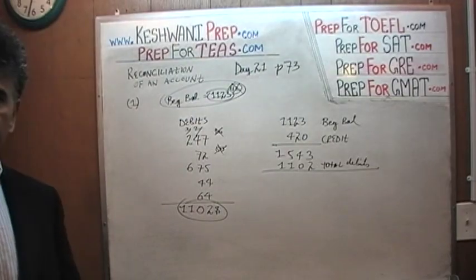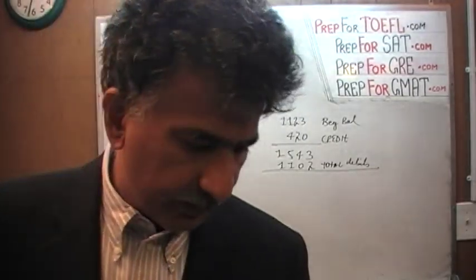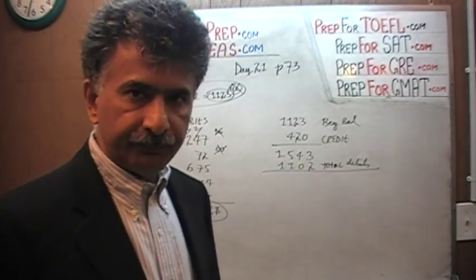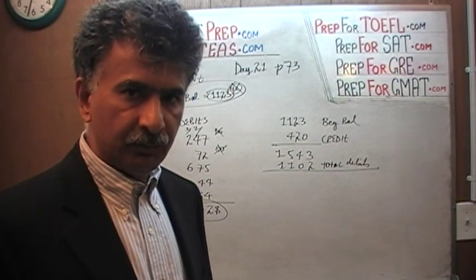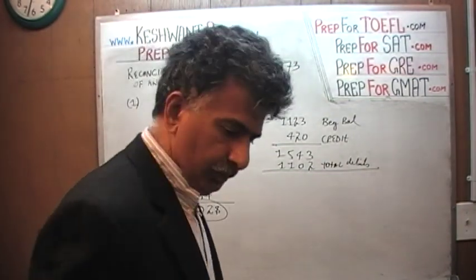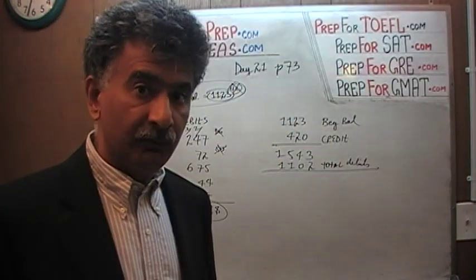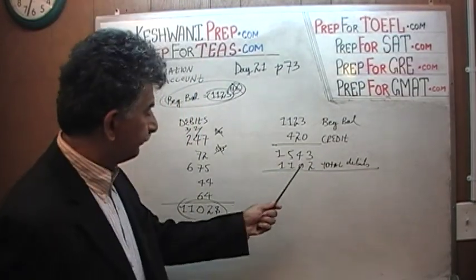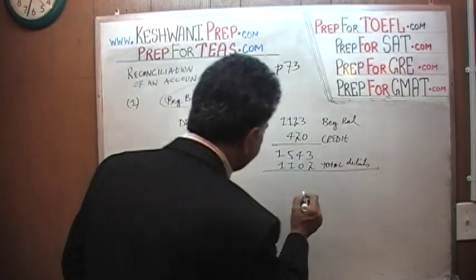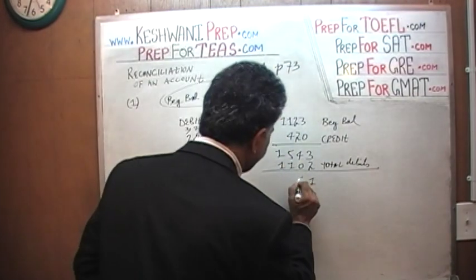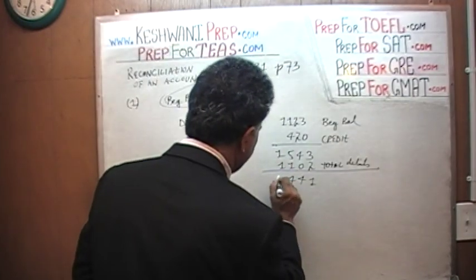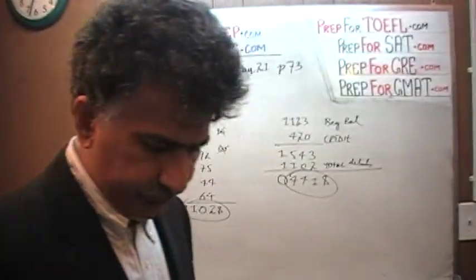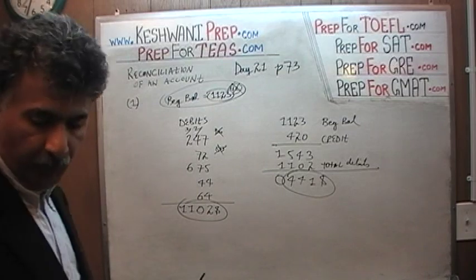That's it — we are done. Whatever that answer happens to be is your ending balance at the end of the month. 3 minus 2 is 1; 5 minus 1 is 4; that's 0. It looks like you are going to have $441 in your account at the end of the month. That was problem number 1. Let's move on to number 2.